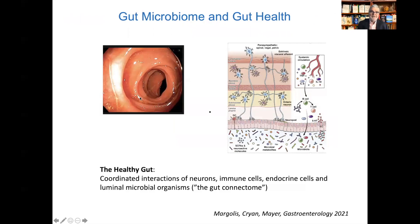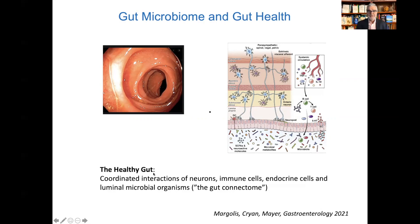Here's the healthy-appearing gut again. What's underlying this mucosal surface is a very complex system, which has been called the gut connectome — a system of millions of nerve cells, the enteric nervous system, of immune cells (the biggest part of the body's immune system is located there), and a variety of cells that line the gut containing hormones or endocrine mediators. The gut microbiome is in very close proximity to this very complex system. A healthy gut exhibits coordinated interactions of neurons, immune cells, endocrine cells, and the luminal microbial organisms.